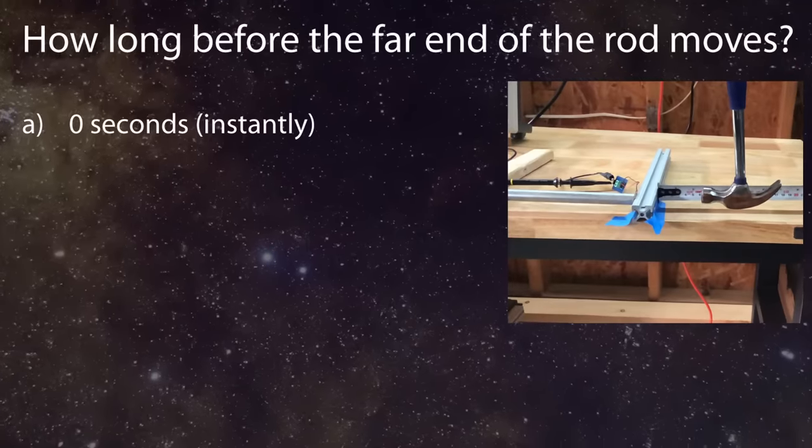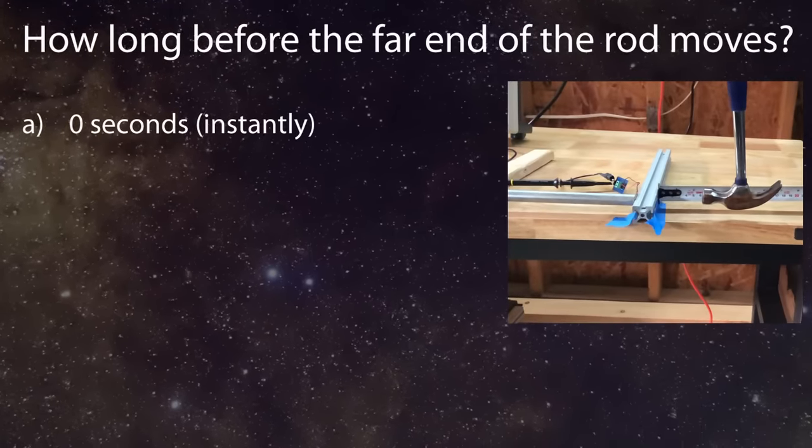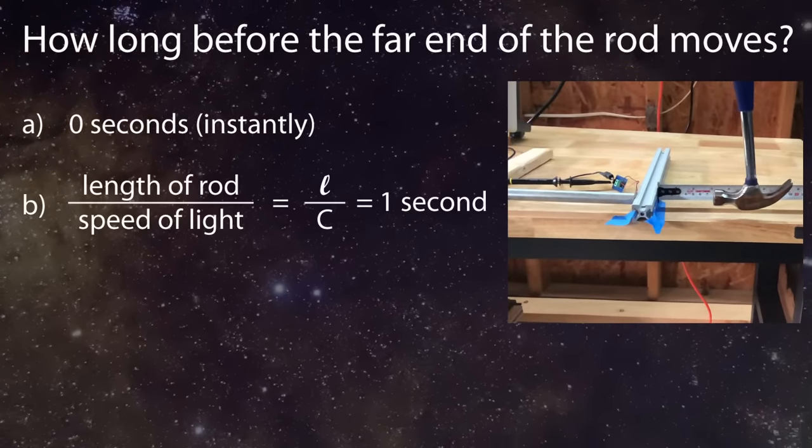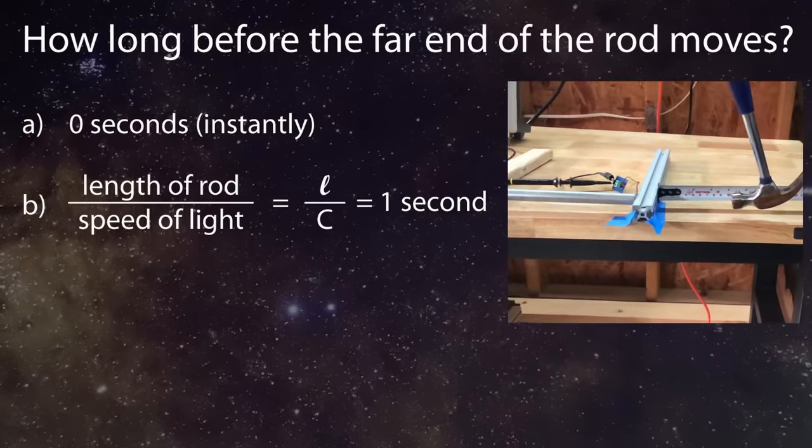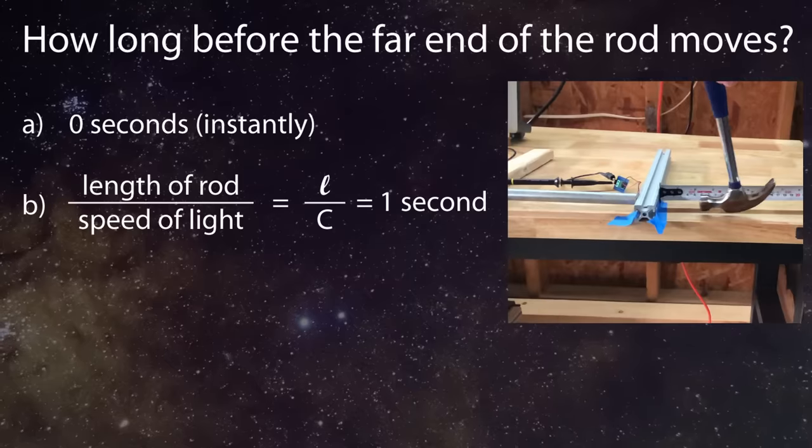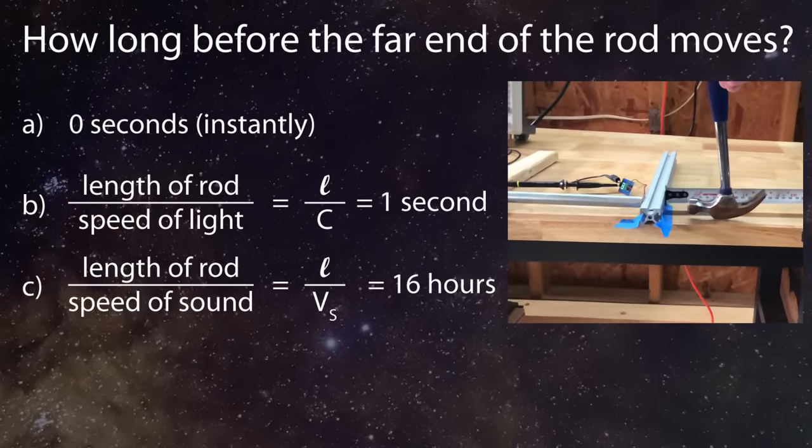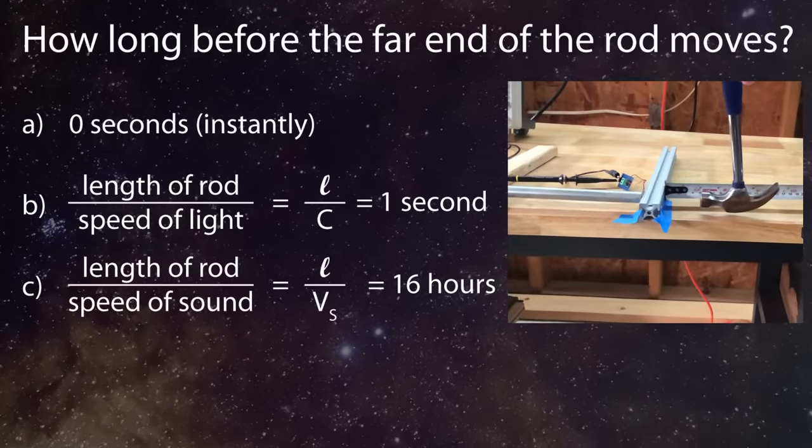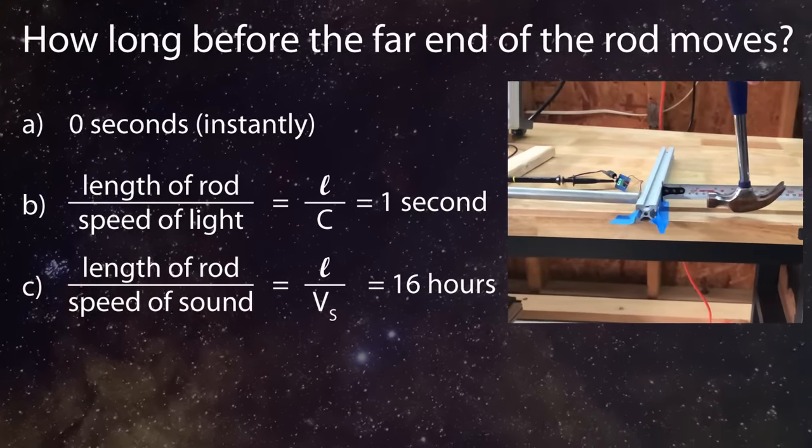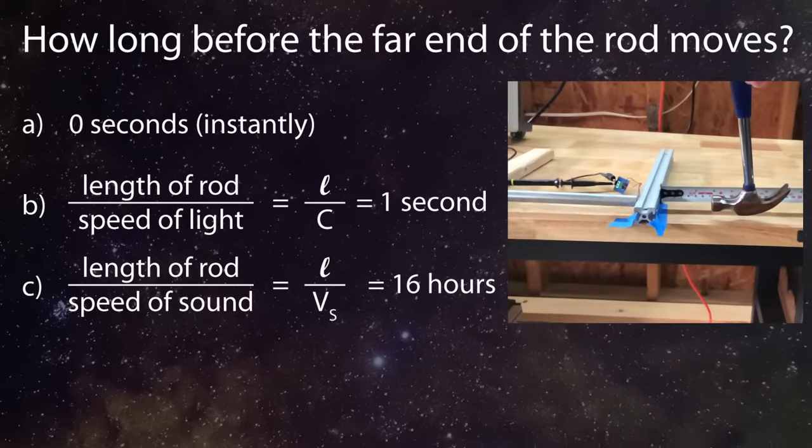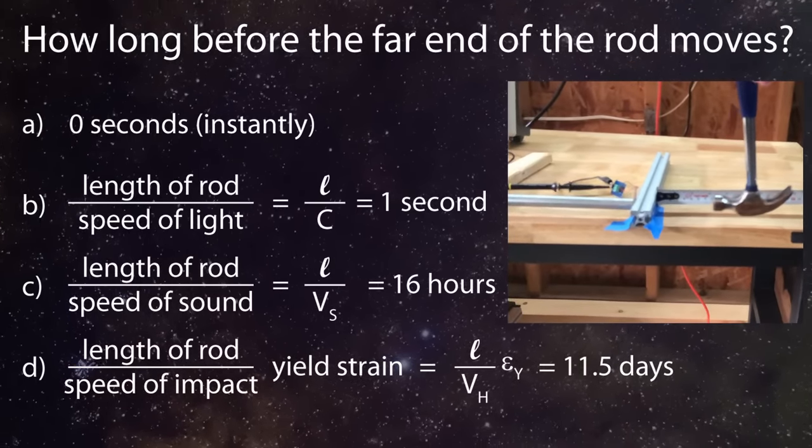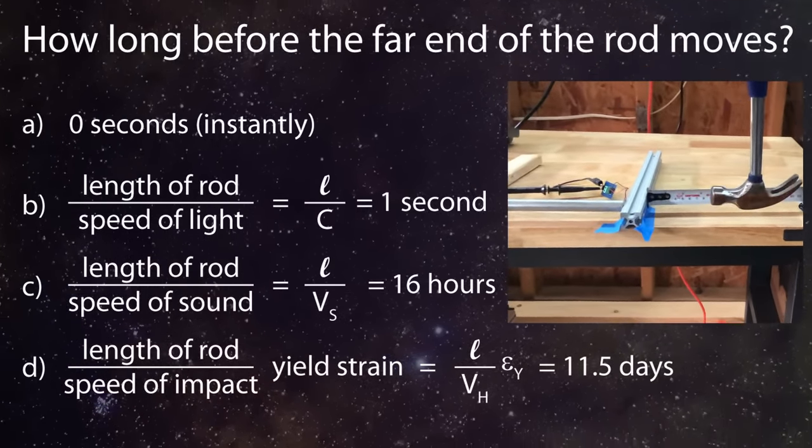So now the question is, once you push on this end of the bar, how long before the observer at the other end of the bar sees their end of the bar move? Does it happen instantly because the metal bar is still a solid object? Does it take the length of the bar divided by the speed of light or one second because the speed of light is the fastest that objects can travel? Is it the length of the bar divided by the speed of sound in the metal, if the material properties are most important? Or does the delay depend on how you hit the bar along with some choice material properties?